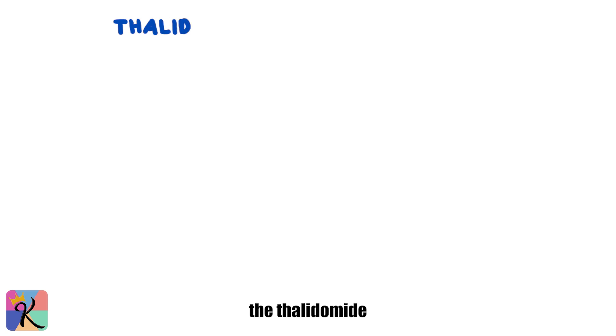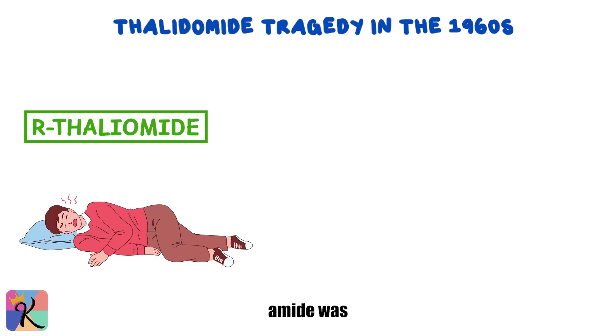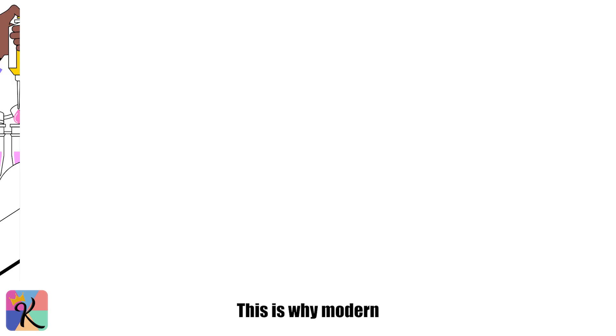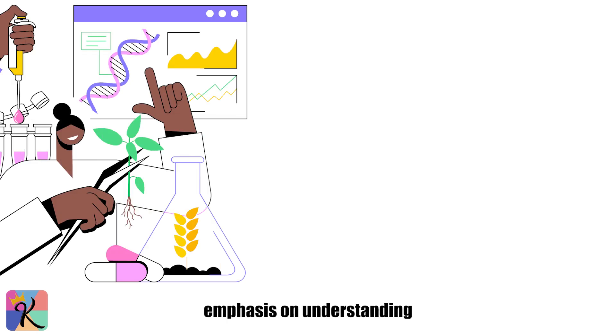For example, the thalidomide tragedy in the 1960s showed us the importance of stereochemistry. One enantiomer of thalidomide was an effective sedative, while the other caused severe birth defects. This is why modern drug development places such a strong emphasis on understanding and controlling stereochemistry.